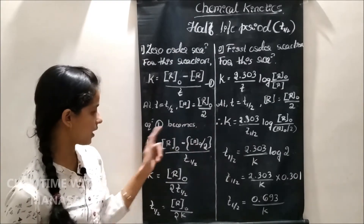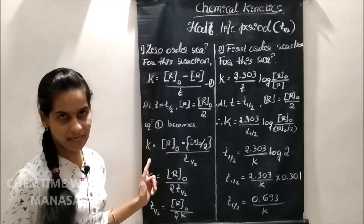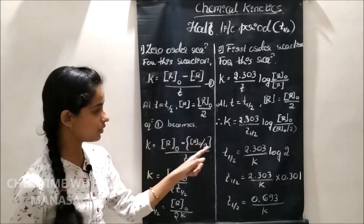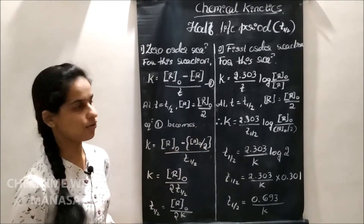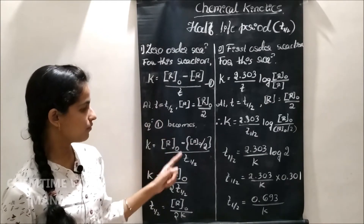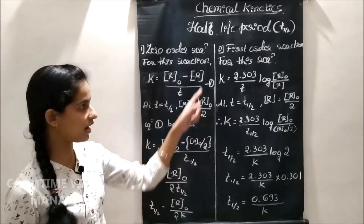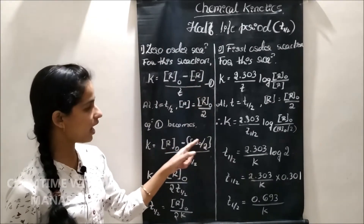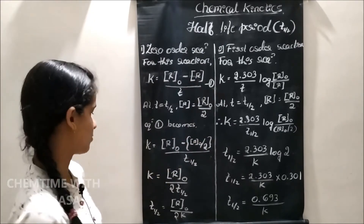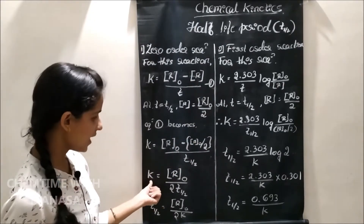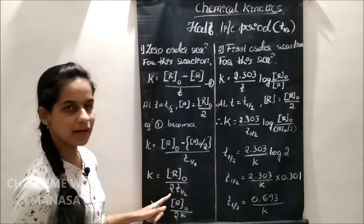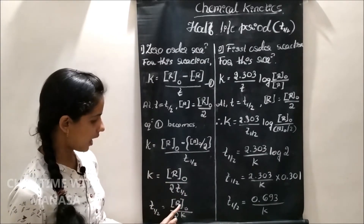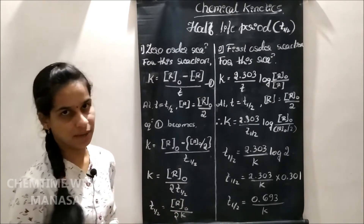Substituting into equation 1, K is equal to R naught minus R naught by 2, divided by T half — substituting T half for T and half the initial concentration for R. This simplifies to K equals R naught divided by 2 times T half, or T half equals R naught divided by 2K. This is the equation for the half-life period of a zero order reaction.